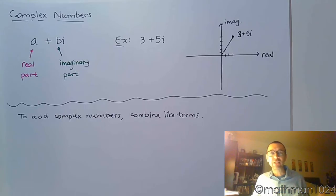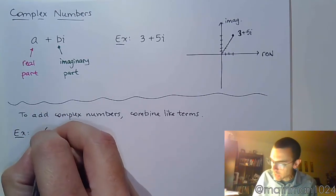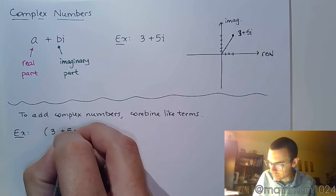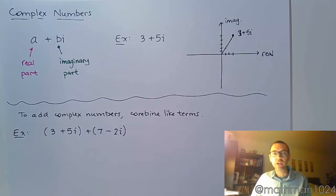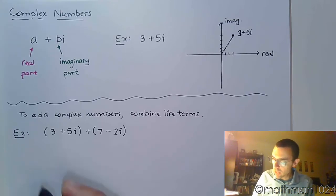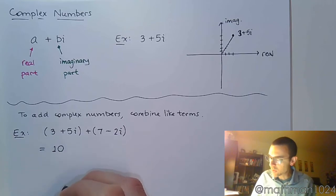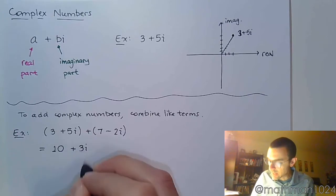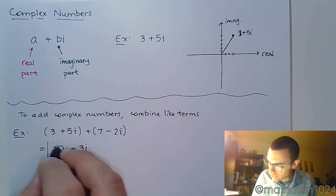There does not need to be a formula for this. To add complex numbers, combine like terms. For example, if we take 3 plus 5i plus 7 minus 2i, all you have to do is combine the real parts, combine the imaginary parts, and you're going to be done. So here you combine the real stuff, so 3 and 7 is 10. Combine the imaginary pieces, positive 5, negative 2 gives you positive 3i, and that's it. You can't combine the 10 and the 3i, so it stays just like this.